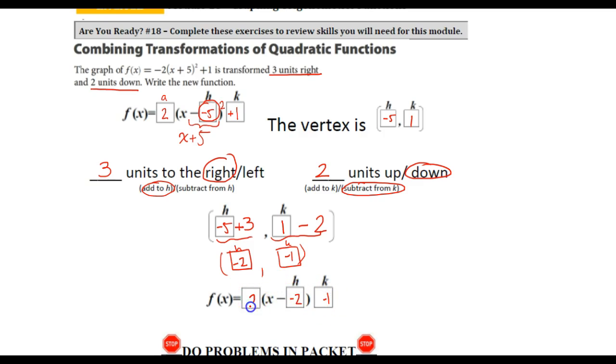I'd still keep my same a value. And I could simplify this even further and say that my new equation would be f(x) = -2(x + 2)² - 1.